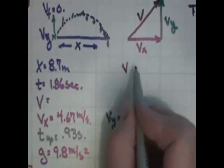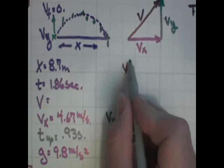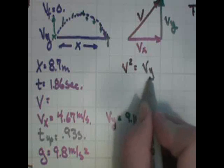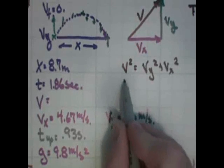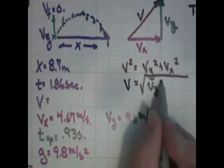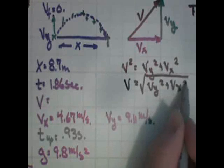Well, I'm going to step through the algebra very quickly. If velocity squared is equal to vy squared plus vx squared, then the velocity is equal to the square root of vy squared plus vx squared.